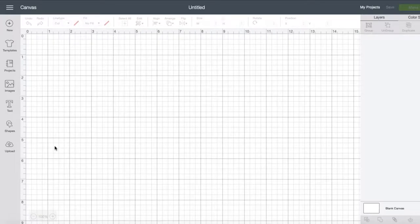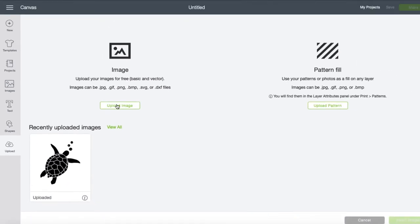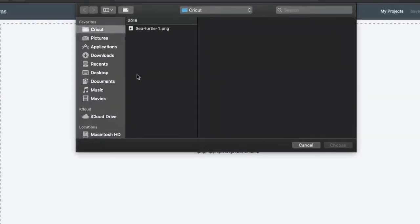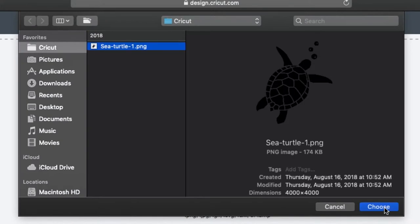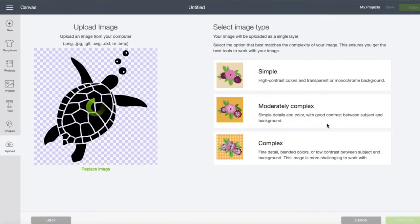Okay so open up Design Space and start a new project. I'm going to click upload since I'm uploading my own image, we're going to browse, click on our image file, and then we're going to click simple since the image is only one color.